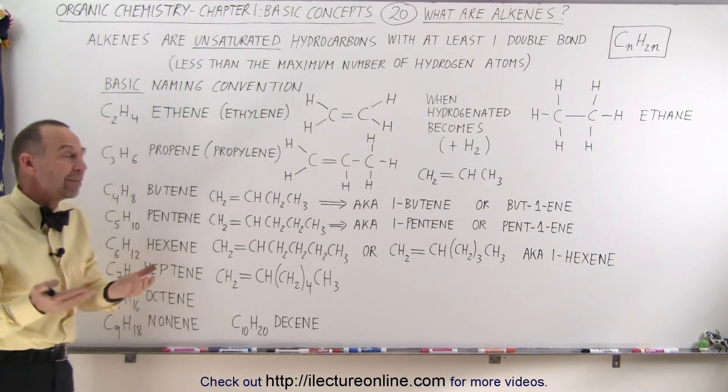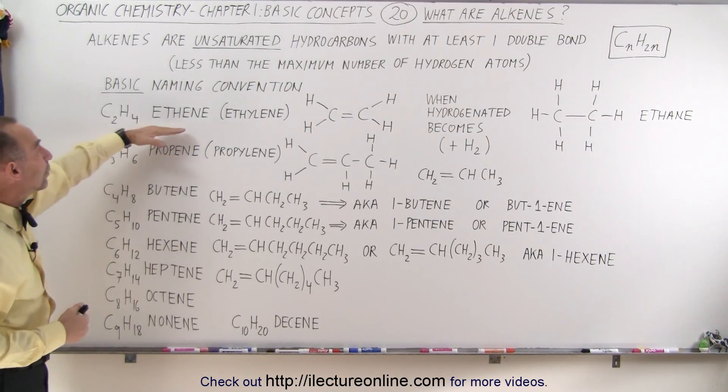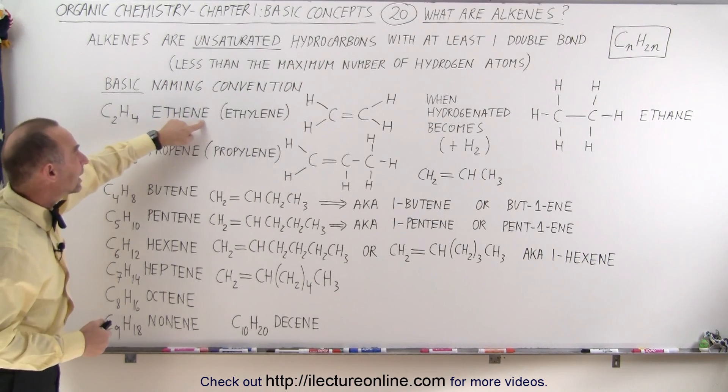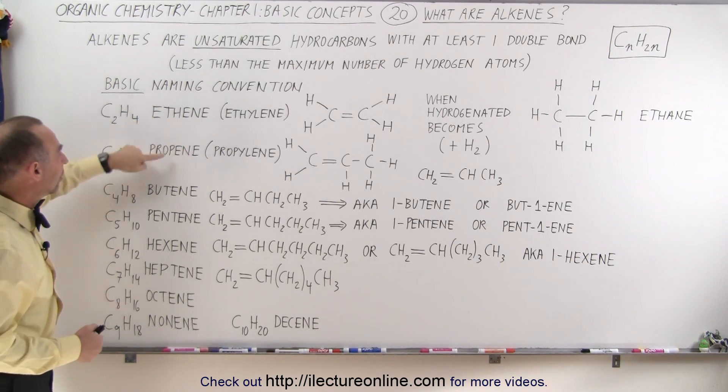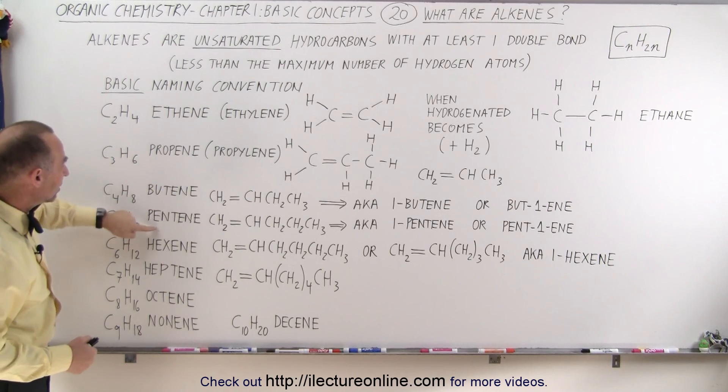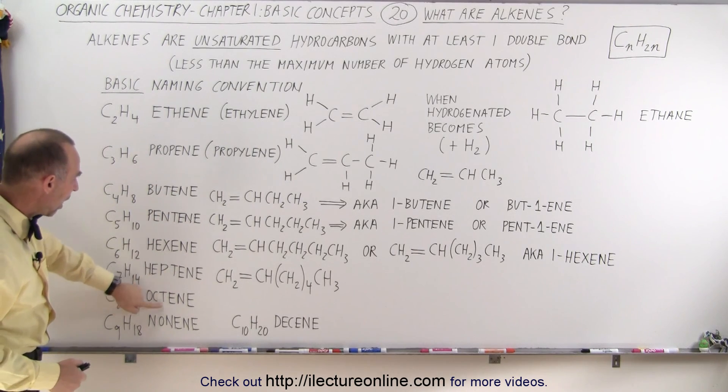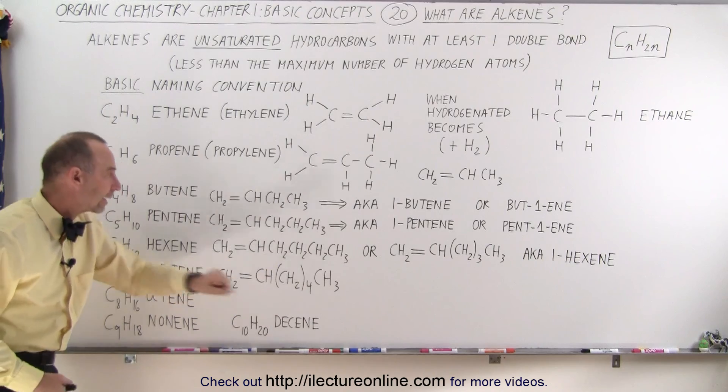Naming convention is basically the same as the alkanes, except instead of ending with an '-ane', we're going to end with an '-ene', like ethene, propene, butene, pentene, hexene, heptene, octene, nonene, and decene.